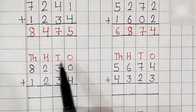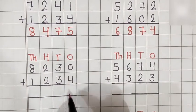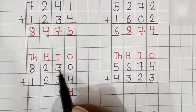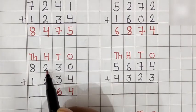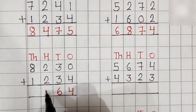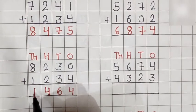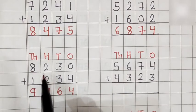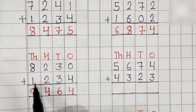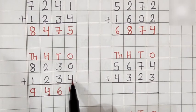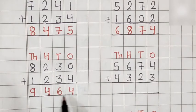This is the 1s place, 10s place, 100s place, and 1000s place. 0 plus 4 is equal to 4. 3 plus 3 is equal to 6. 2 plus 2 is equal to 4. 8 plus 1 is equal to 9. So, 8,230 plus 1,234 is equal to 9,464.